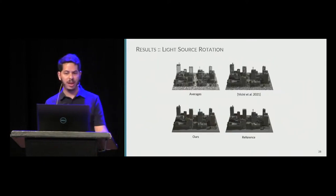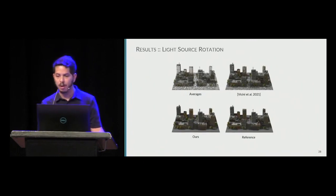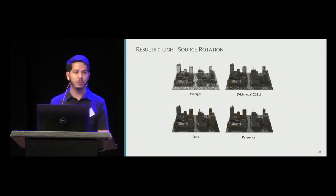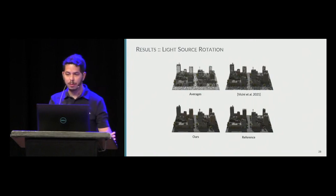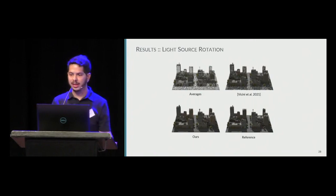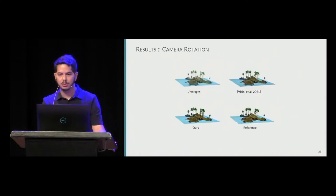We compare our representation against the average color, normals, and opacity baseline, and against Vicini's approximation, using only local information for each approach — different from Vicini's improved method. The reference image is rendered with 1,024 rays per pixel. Our representation can reproduce different appearances: buildings and streets as large occluders, and trees and building antennas as volumetric appearance. Other approaches have difficulty reproducing surface-like appearance, as seen in the holes in buildings and streets.